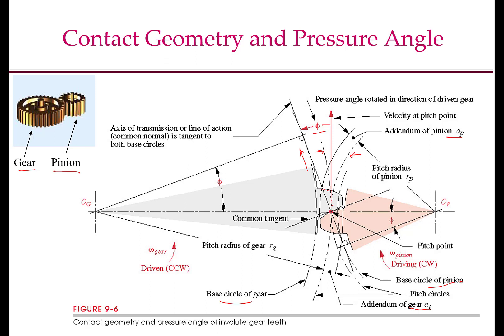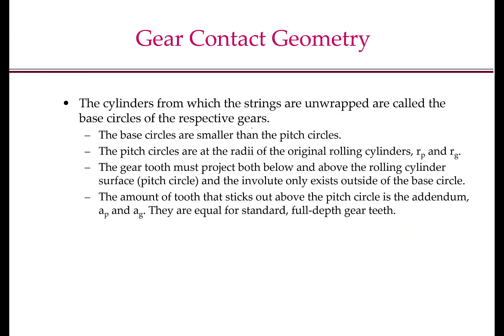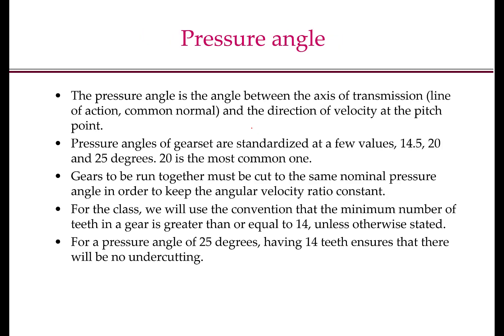For this class, when designing gear trains and selecting gears, we will adopt a convention that the minimum number of teeth in a gear is 14 unless otherwise stated. This number is chosen because for a pressure angle of 25°, having 14 teeth ensures there will be no undercutting, meaning the top land of one gear tooth will not interfere with the bottom land of the mating gear. Note that having a smaller pressure angle is actually better in terms of force transmission. In the next module, we will see how to design gear trains.